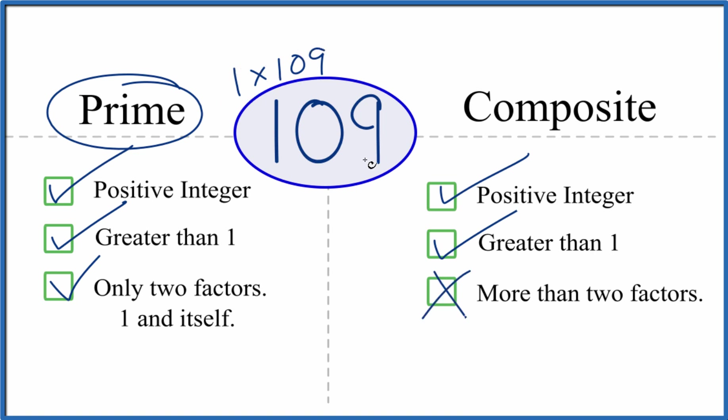That means that 109 is not a composite number. This is Dr. B, looking at whether 109 is prime or composite. It's prime. Thanks for watching.